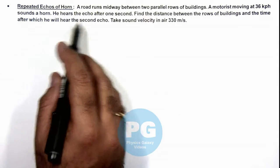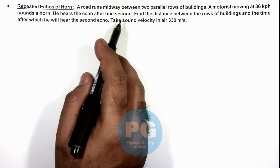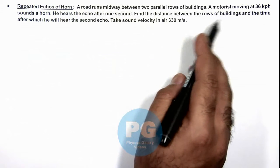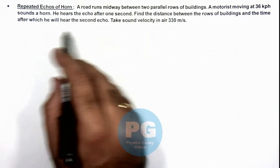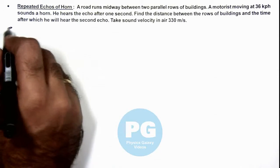And he hears the echo after one second. And we are required to find the distance between the rows of buildings and the time after which he'll hear the second echo. Sound velocity is given to us.